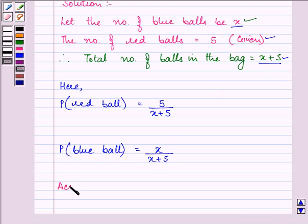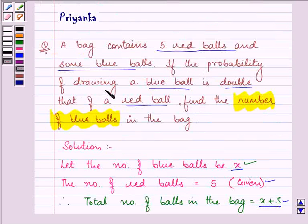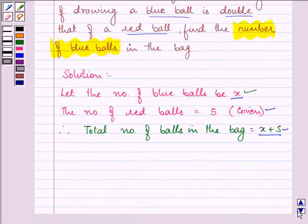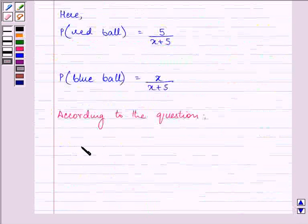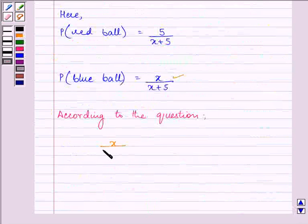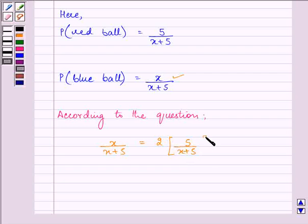Now according to the question, we are given that if the probability of drawing a blue ball is double that of a red ball. That means probability of a blue ball, that is x upon x plus five, is double that of a red ball, that is five upon x plus five. Then we need to find out the value of x, that is the number of blue balls in the bag. So let us solve the following question.